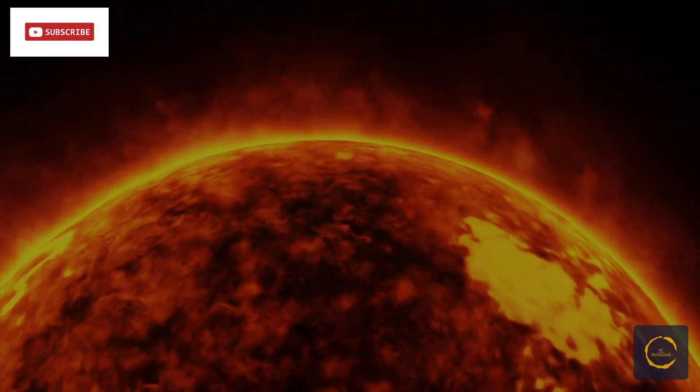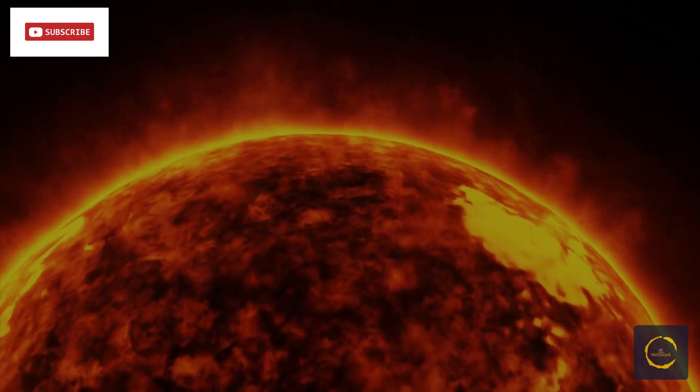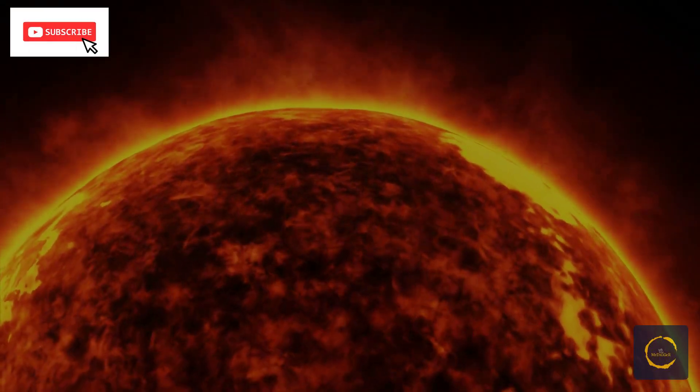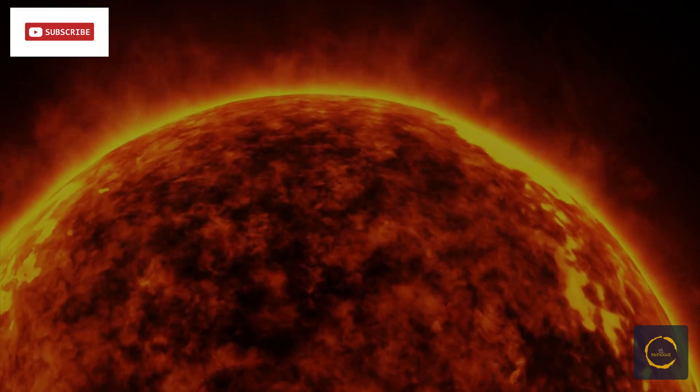During solar minimum, there are fewer giant eruptions from the sun, such as solar flares and coronal mass ejections. But during solar maximum, the sun becomes more active.